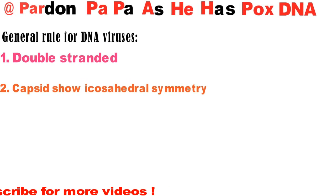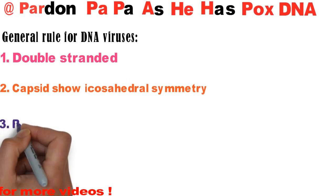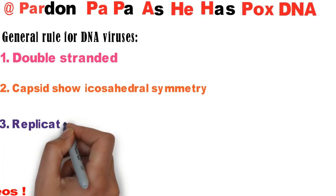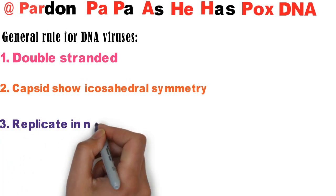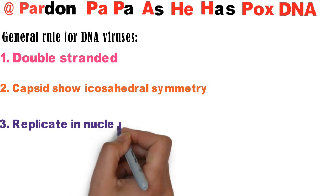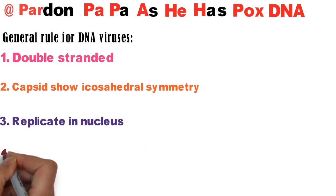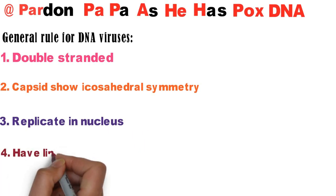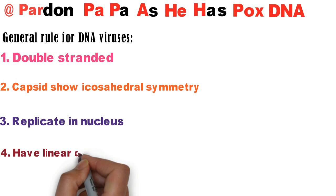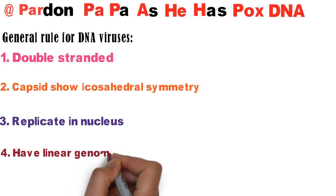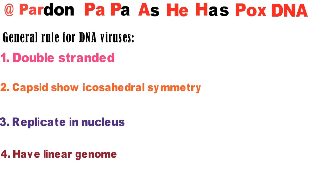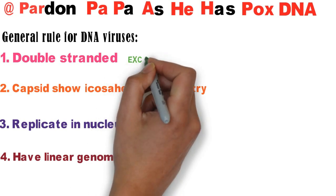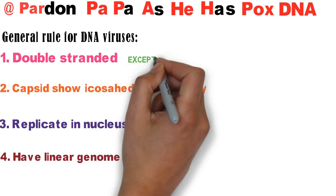Third rule: most DNA viruses replicate in the nucleus. Fourth rule: most DNA viruses have a linear genome. Each of these rules has an exception.